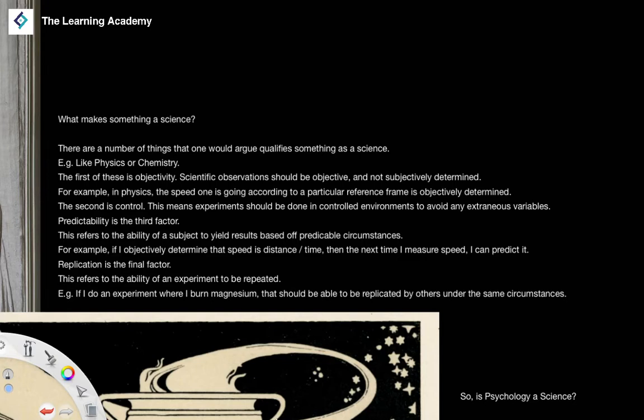We can argue what science looks like. We can talk about things like the natural sciences, like biology, chemistry, physics, and maths. You would argue that those qualify as a science, and that they have a number of characteristics that psychology doesn't.